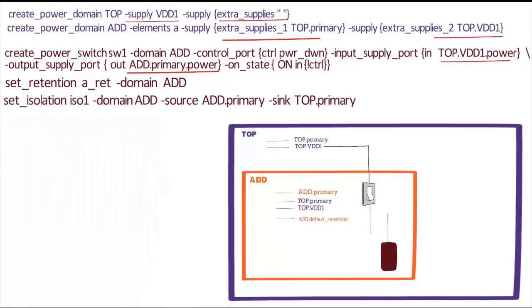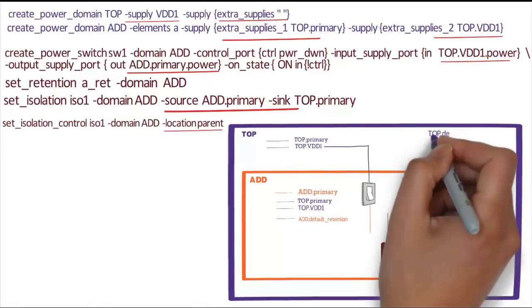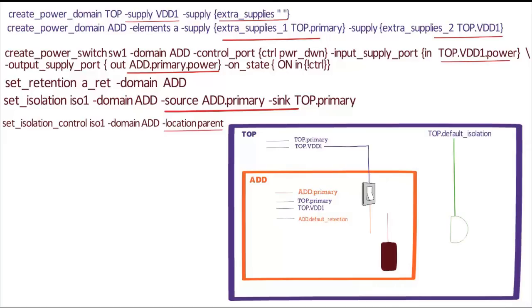The Isolation Strategy is defined with Source as Add.Primary and Sync as Top.Primary with Location Parent. So the Isolation Cell will be placed in Top and associated to Top.Default Isolation.